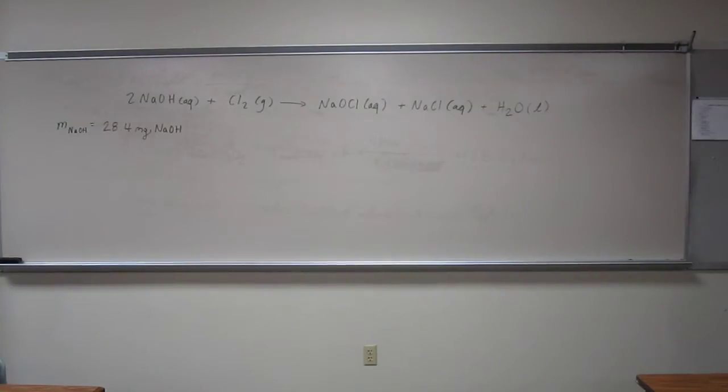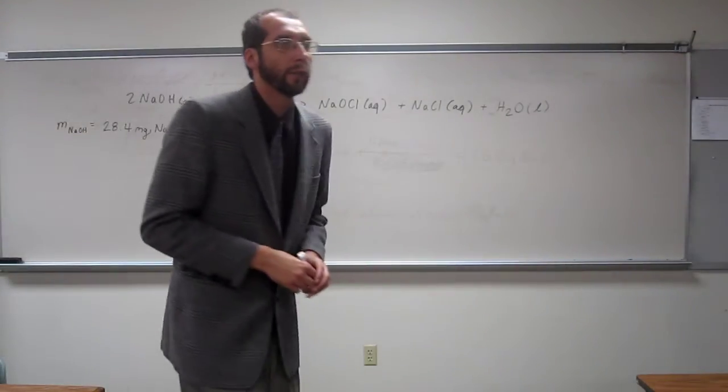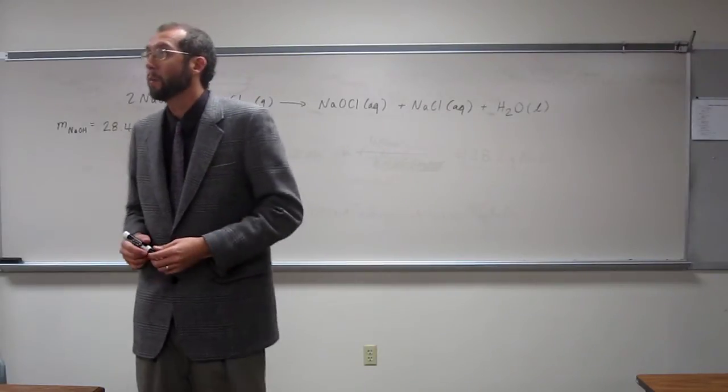Okay, so let's do this question. It says, calculate the maximum yield of sodium hypochloride you would get if you started with a mass of sodium hydroxide of 28.4 milligrams. So let's try to do that problem.